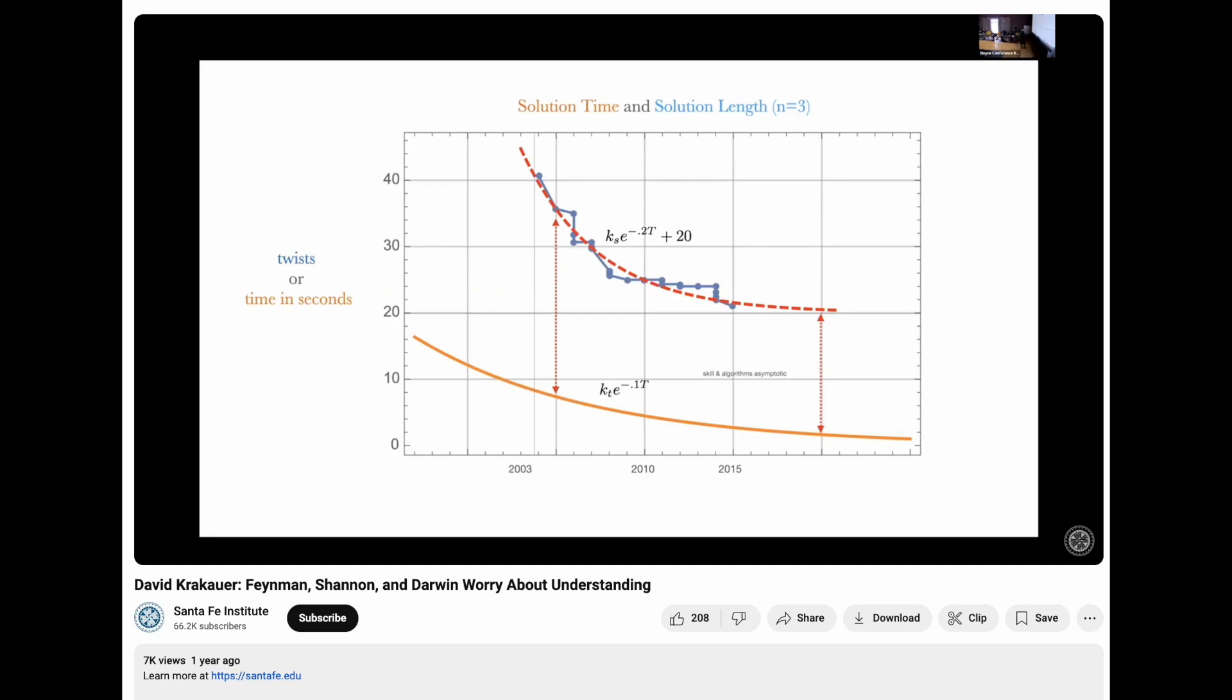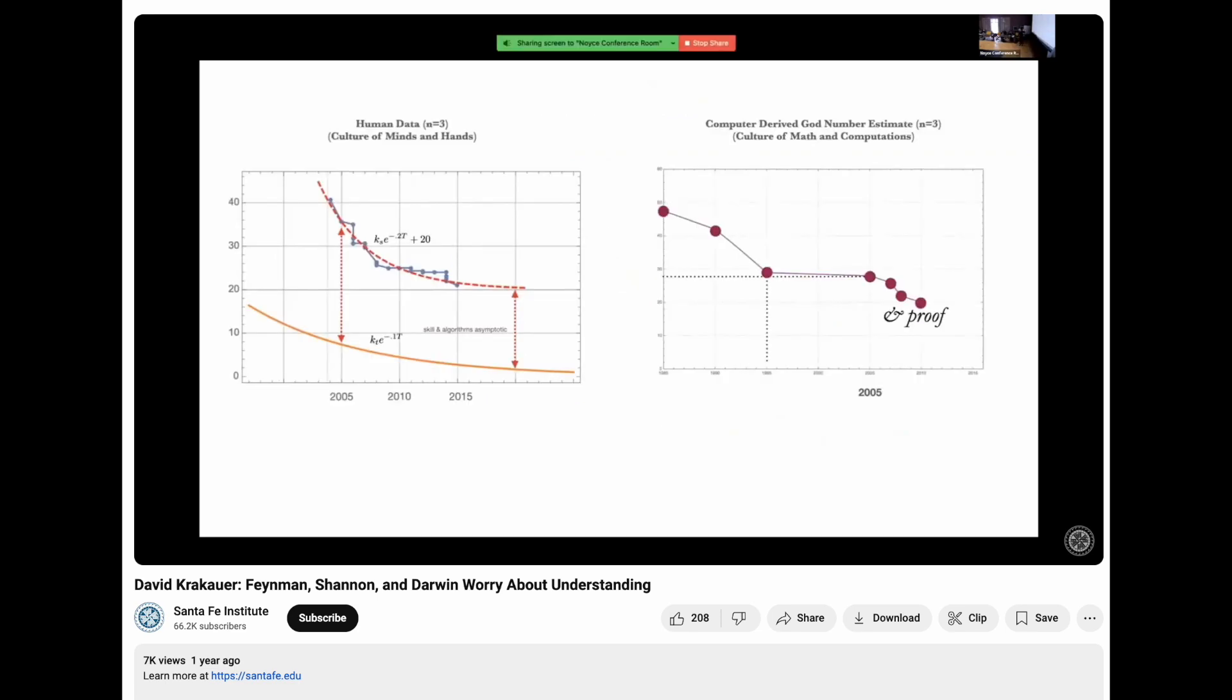Here, try this. This is a collective intelligence task, a very interesting one, that you can study all the details of. What I'm plotting here on the left is human performance, it's on the right, computational proof. If you look at 2005 on the right onwards,